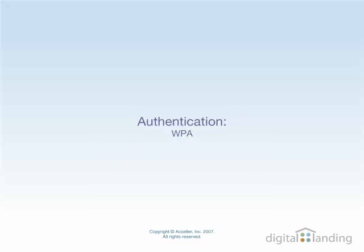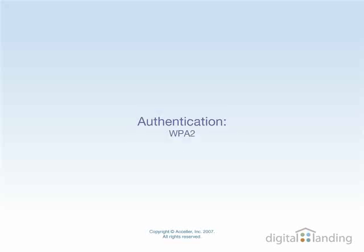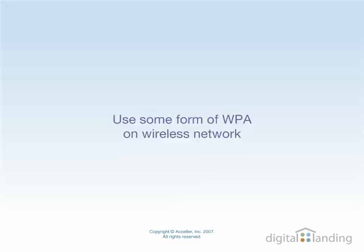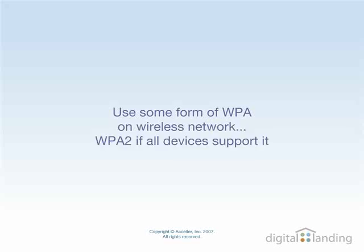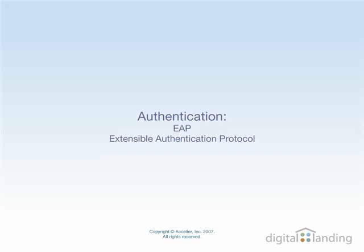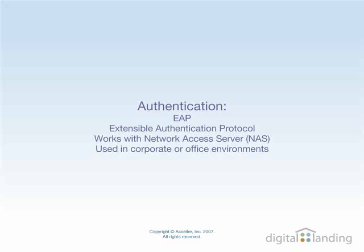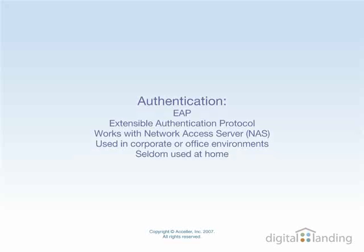WPA appears in the next six settings. It stands for Wi-Fi Protected Access and is a newer, stronger security technology used to protect wireless communications. WPA2 is a second, improved version of WPA and is even newer and stronger still. At a minimum, you want to use some form of WPA on your network, and WPA2 instead if all devices support it. EAP stands for Extensible Authentication Protocol and is widely used on wireless networks. It works with a special type of network server called a network access server, or NAS, which is why you'll find this on lots of corporate or organizational networks, but seldom in a home or home office environment.